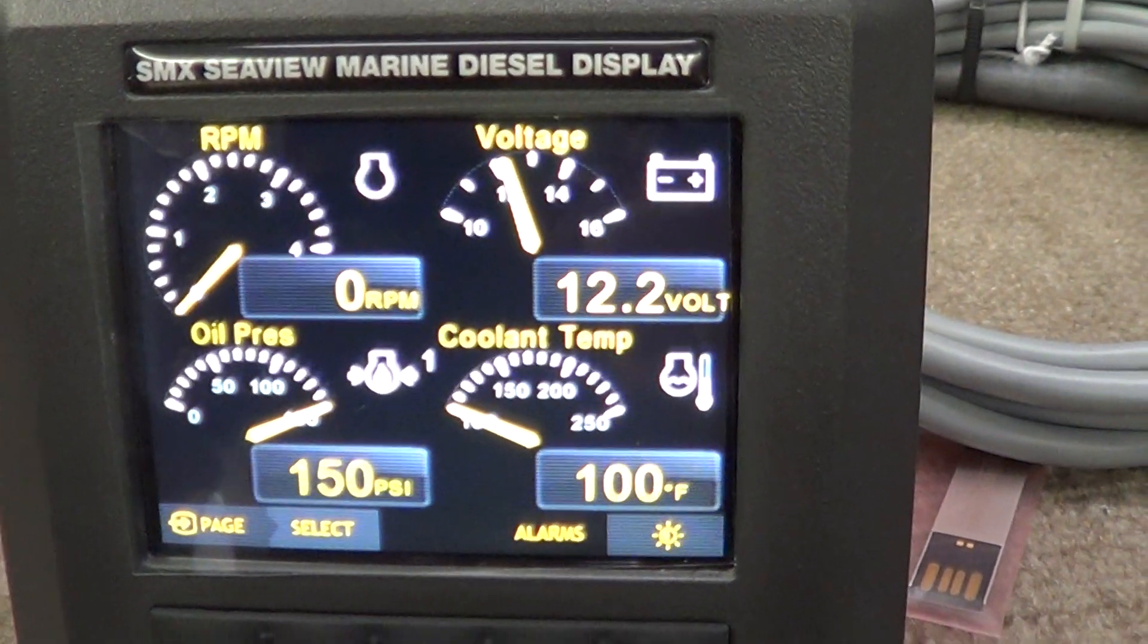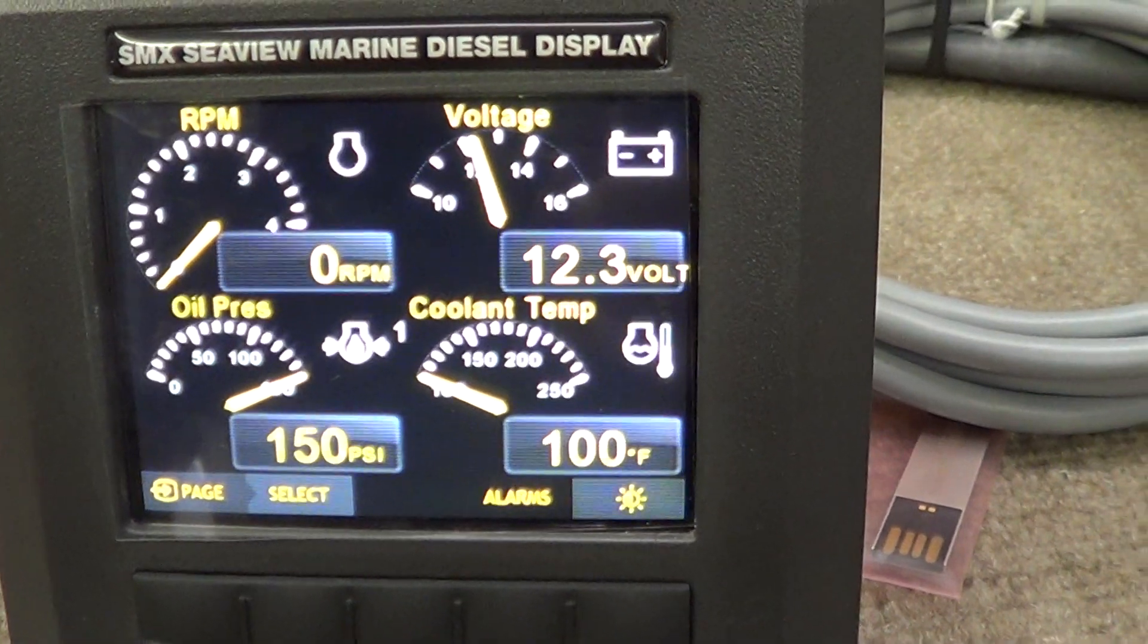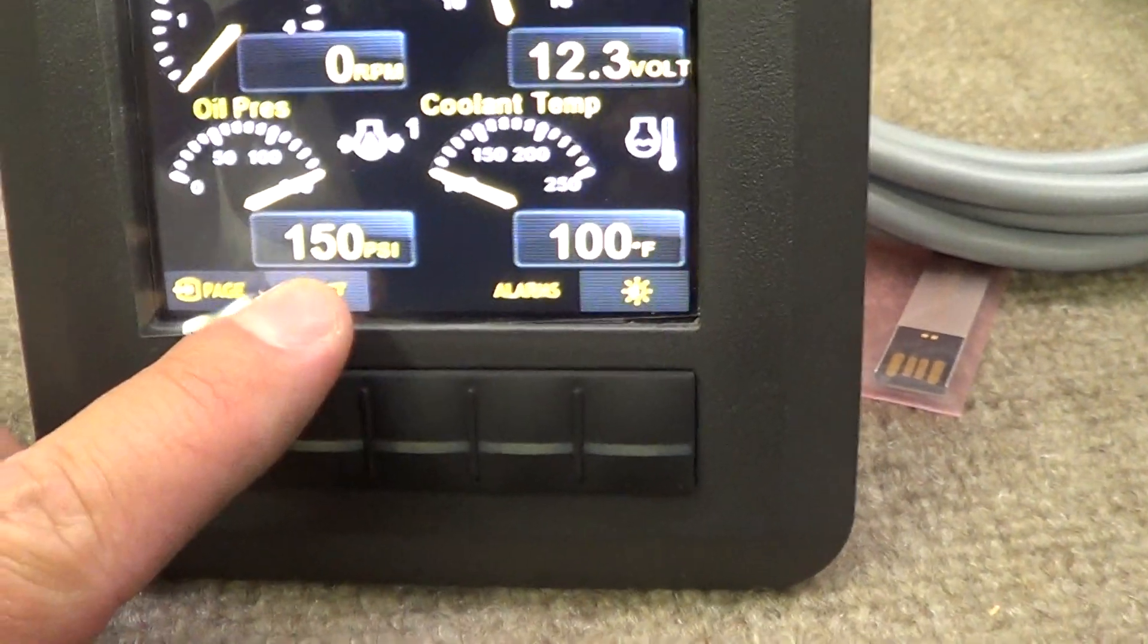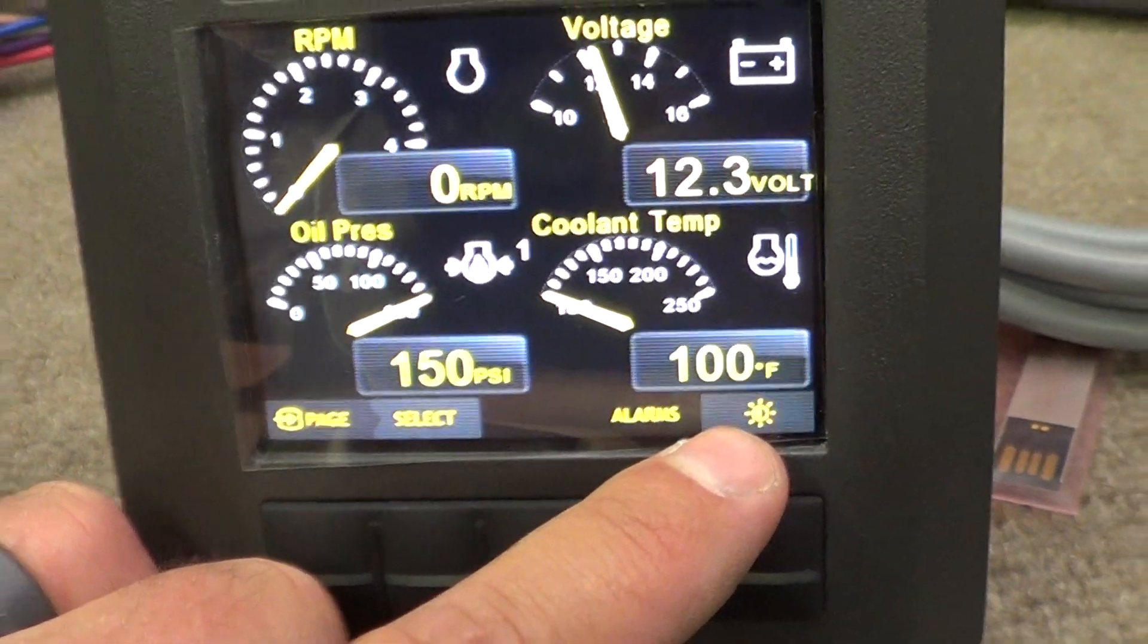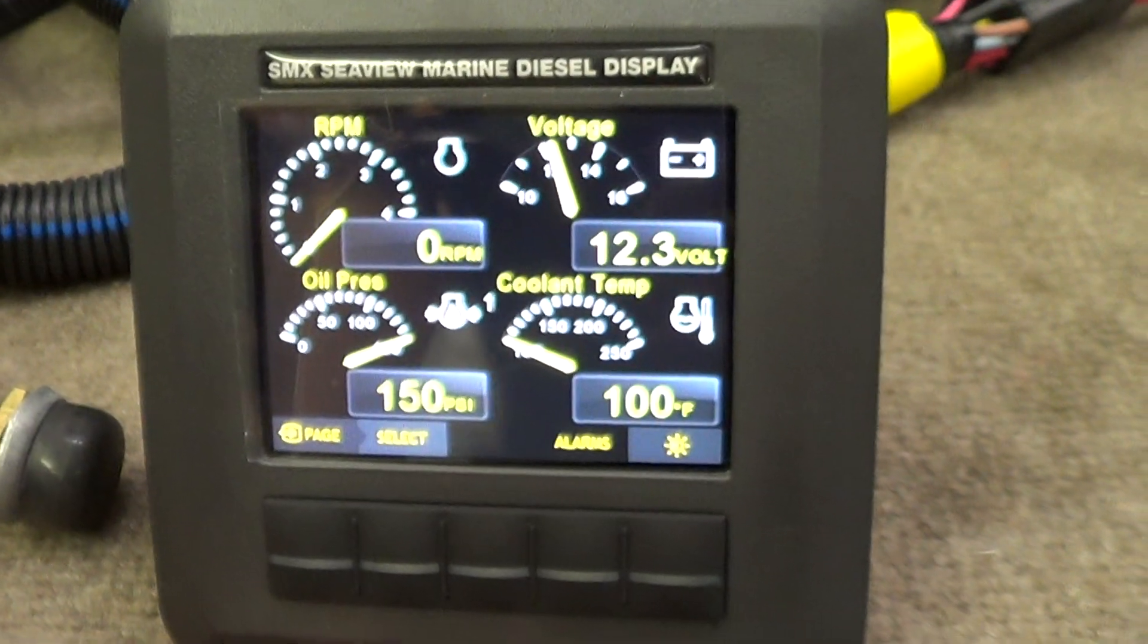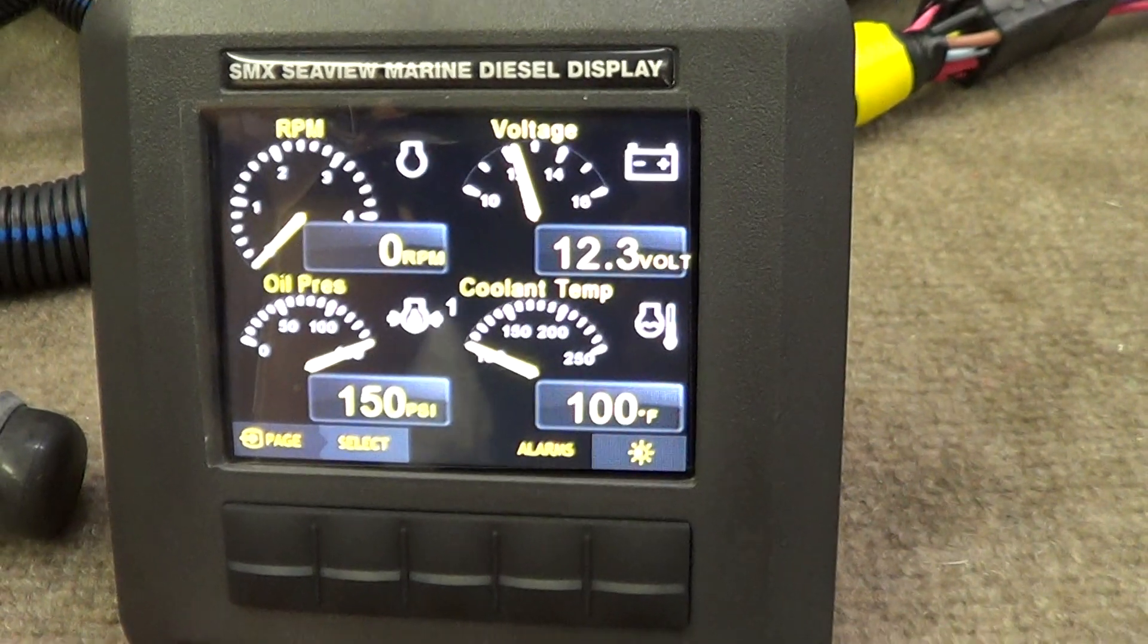Right now we have no sender input through the instruments or harnessing, so we'll notice that the oil pressure is pegged. Coolant temp is basically at the minimum, which is 100 degrees. Also notice that the upper station gauge is also matching that.